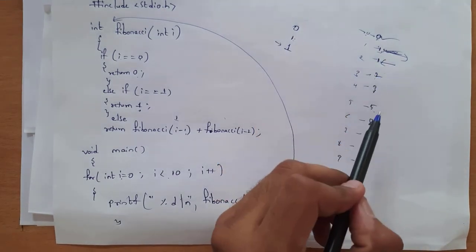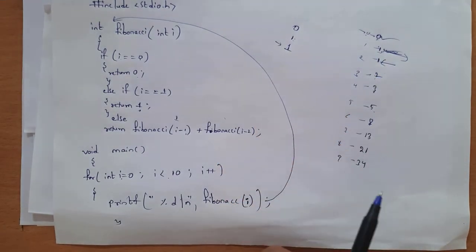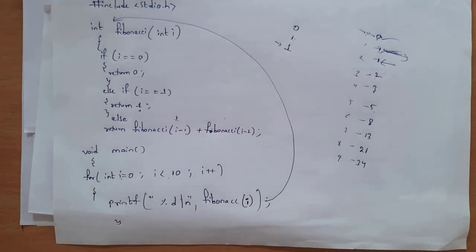The output is: 0, 1, 1, 2, 3, 5, 8, 13, 21, 34. This is the output for this program. This is how we calculate the Fibonacci series.